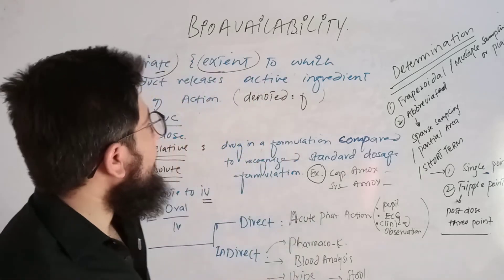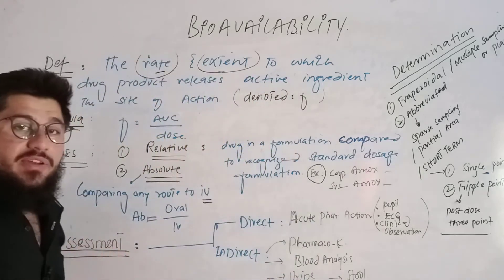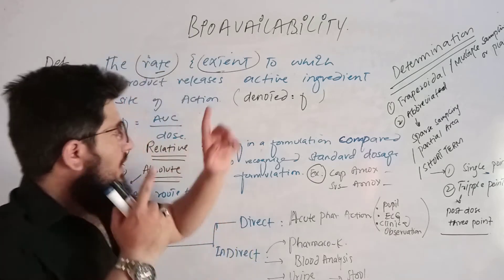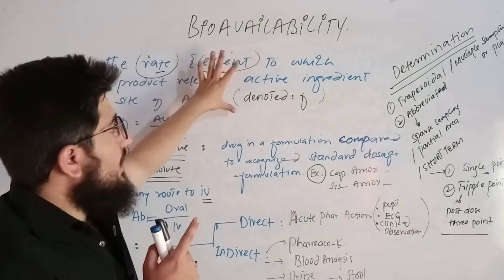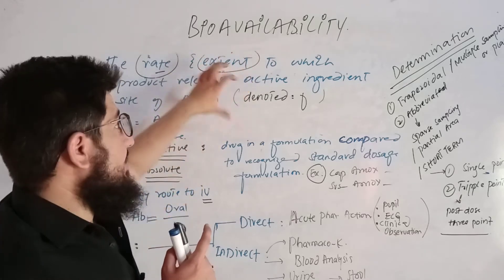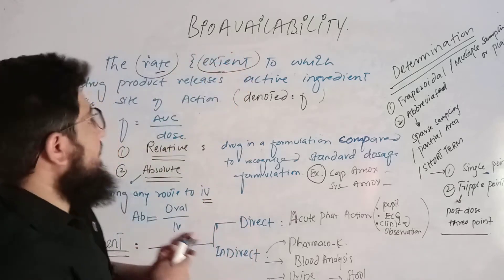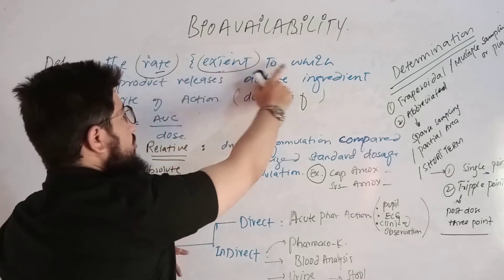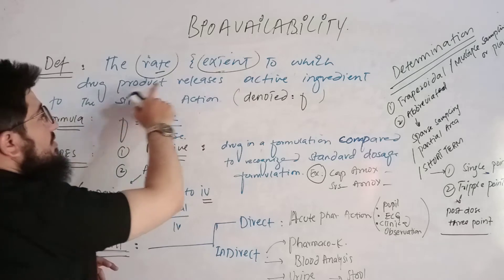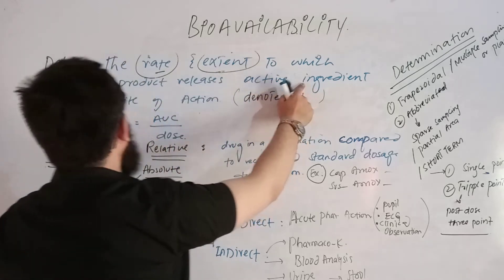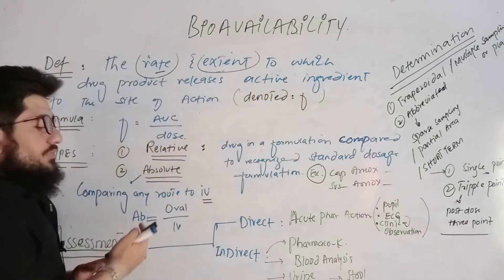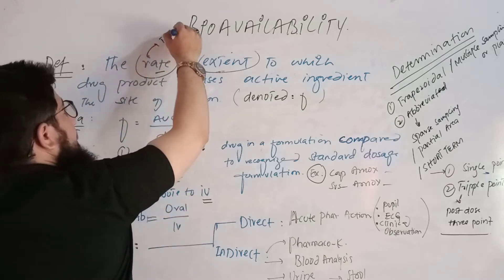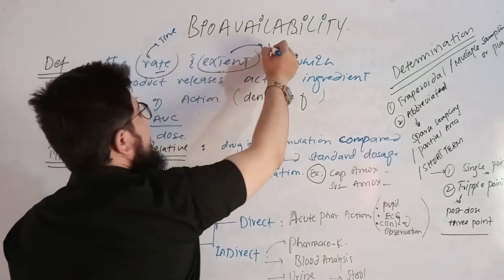Let's get started with the very first point: the definition of bioavailability. The definition is: the rate and extent to which a drug product releases its active ingredient to the site of action. Here, rate refers to time, and extent refers to the amount.